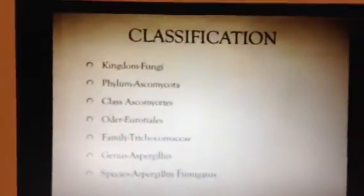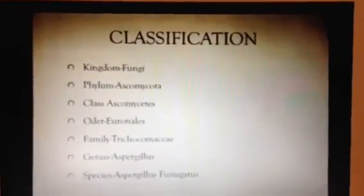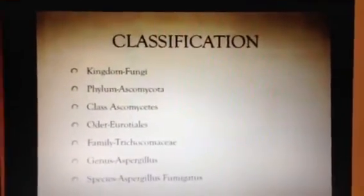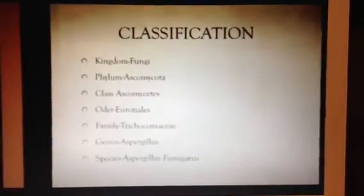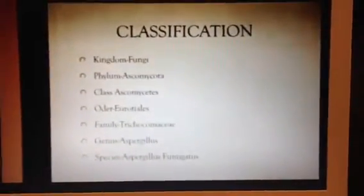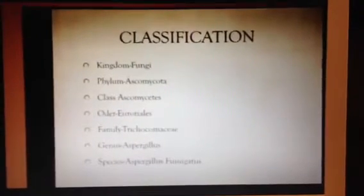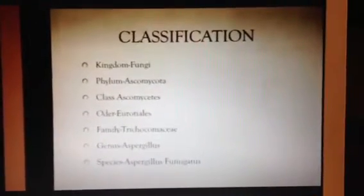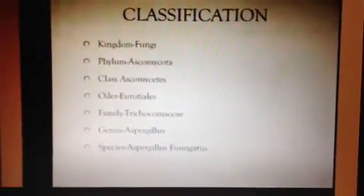Aspergillus fumigatus is classified in the kingdom of Fungi, which is known for being eukaryotic and heterotrophic. They lack chloroplasts and store their food in the form of glycogen. They are in the phylum Ascomycota, known for producing sexual spores. The class Ascomycetes is also known for producing sexual spores. The order Eurotiales is known as the blue and green molds, and it is in the family Trichocomaceae.